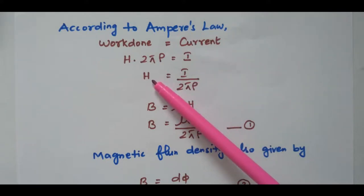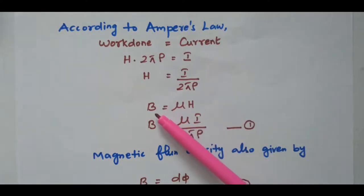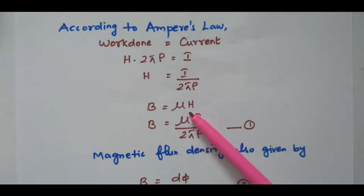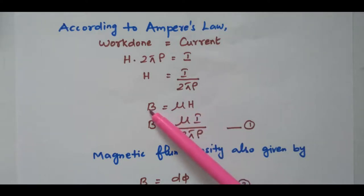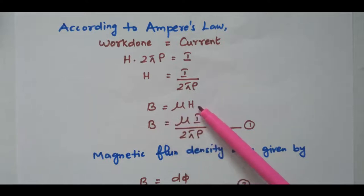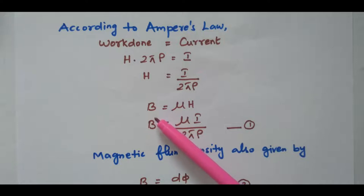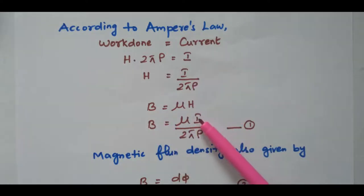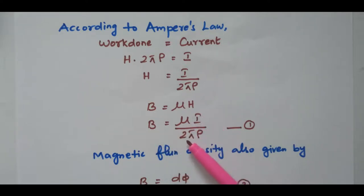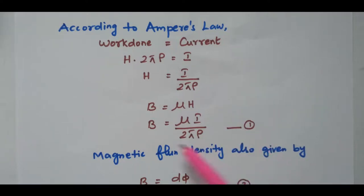From the magnetic field intensity, the magnetic flux density B can be calculated using B equals μH. So B equals μ times I divided by 2πρ. This is equation number 1.